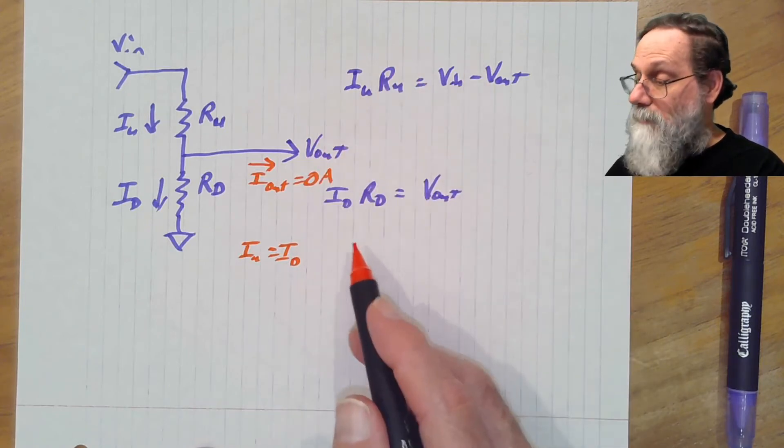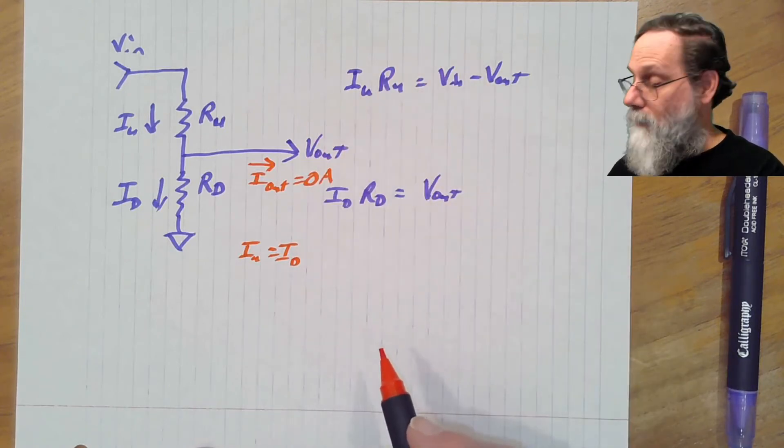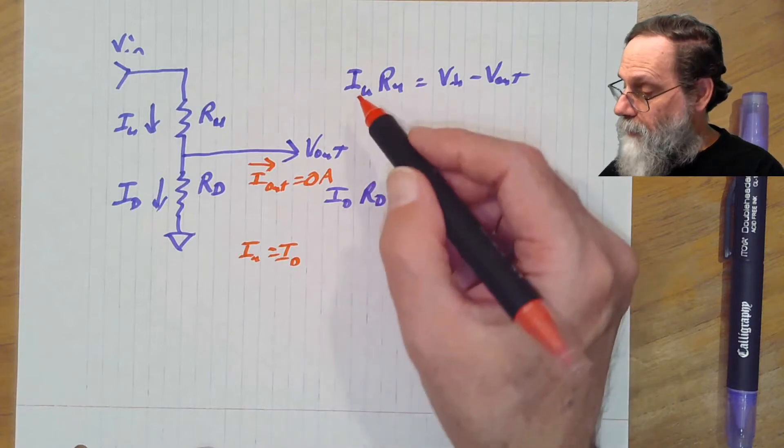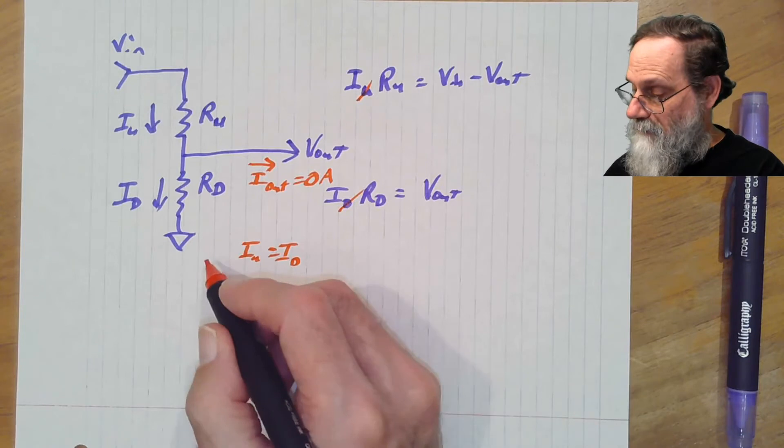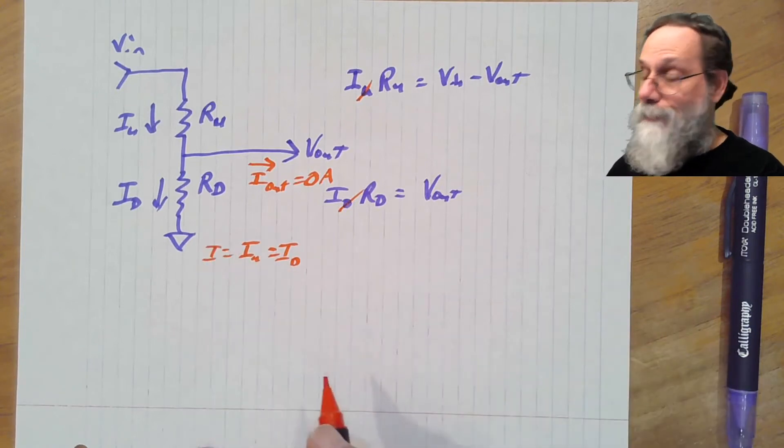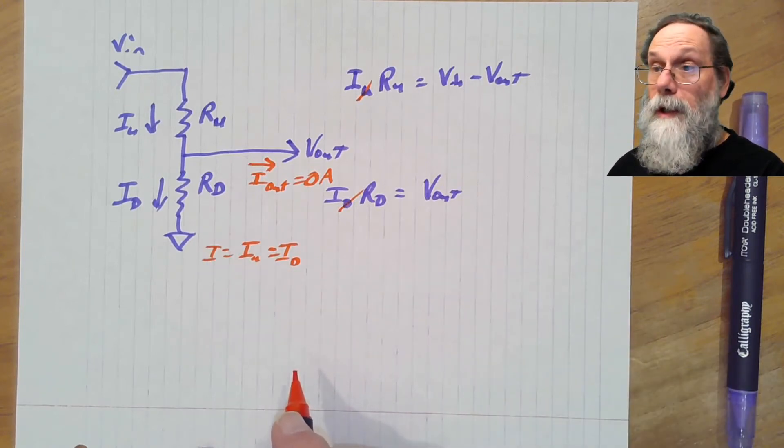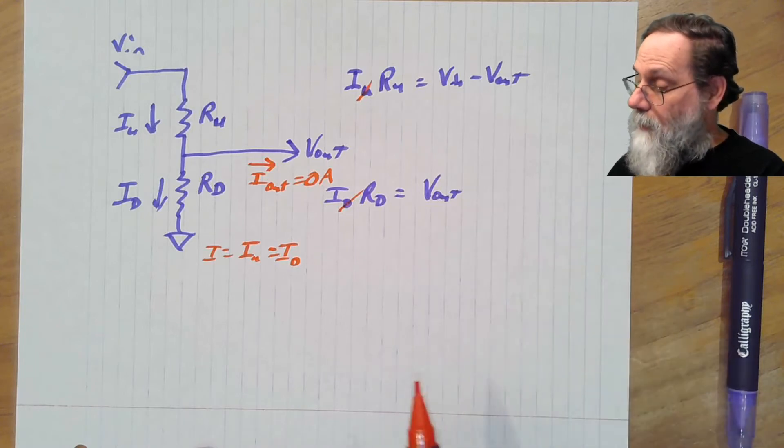And that means that we can simplify this thing a little bit, because we can basically just cross out the subscripts there and say, just call that the current. Well, what does that give us? A couple things.